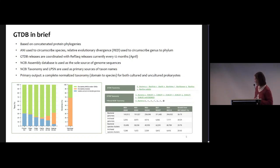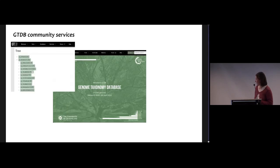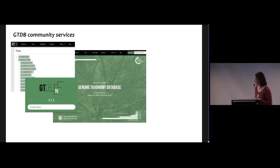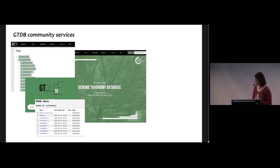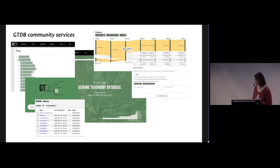As a database, GTDB provides a number of community services. We provide an interactive tree viewer so people can see which taxa belong where. We also provide a toolkit where users can classify novel genomic sequences according to our framework. All taxonomy data and flat files are available linked to genome sequences from NCBI. We have a tracking system where users can see whether a classification has changed between releases, an ANI calculator to compare whether they're dealing with the same species, an API, and a forum and contact form for discussion.